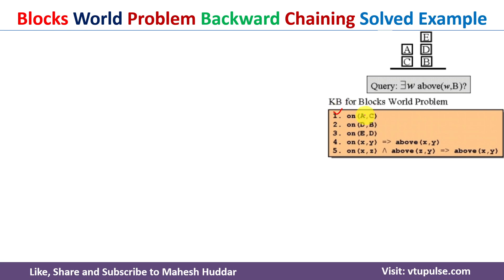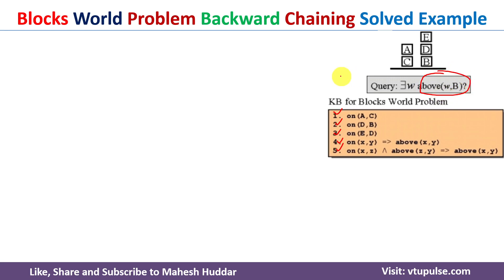The first knowledge base says a is present on c. The second says d is present on b. The third says e is present on d. The fourth says if x is present on y, then x is above y. The fifth says if x is present on z and z is present above y, then x is present above y. Given these five knowledge bases, we need to answer the query above(w, b).